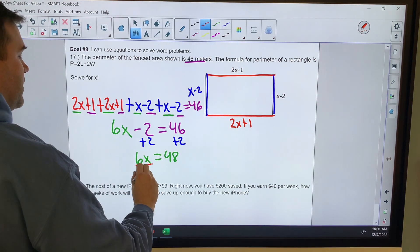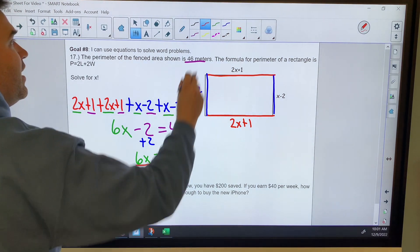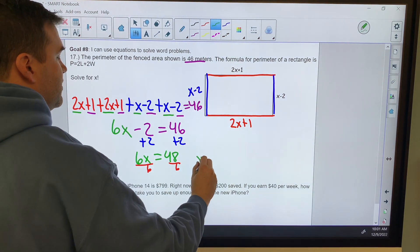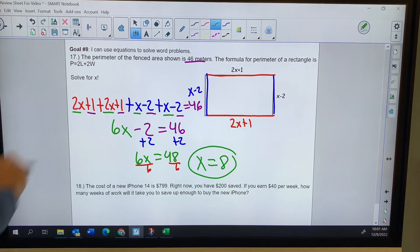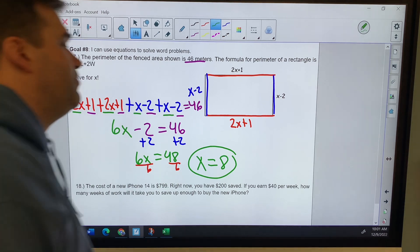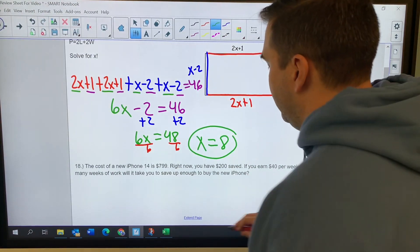And when I divide both sides by 6, I end up with x is equal to 8. We make sure it does say solve for x. Sometimes it's going to try and trick you and say solve for a side. I'll make sure that's not doing it to me.